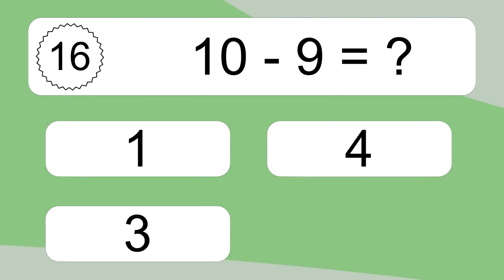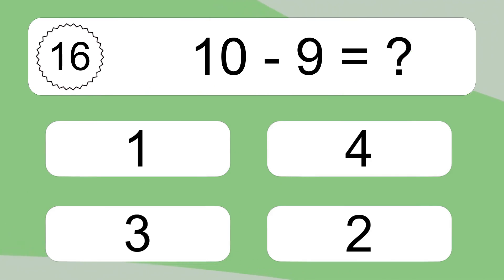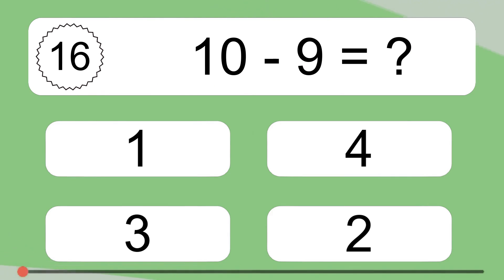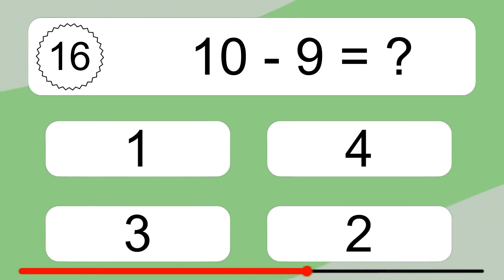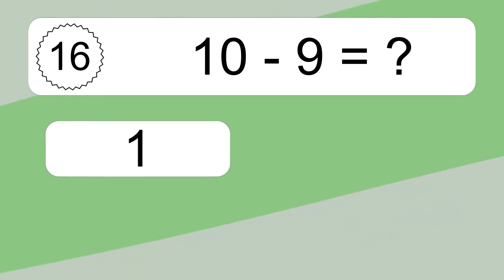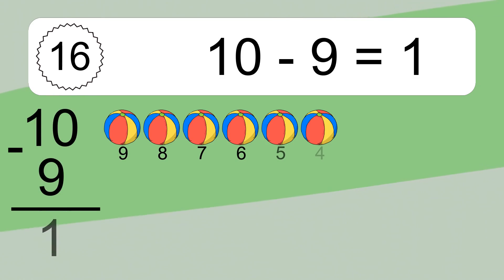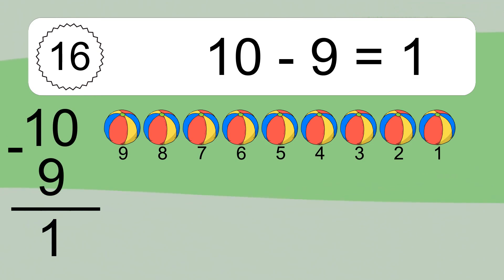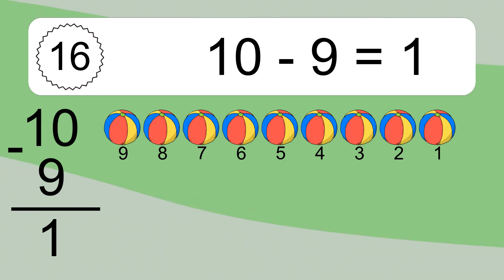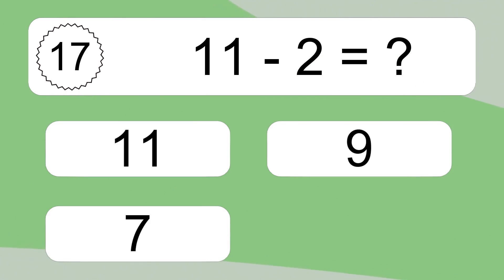10 minus 9 equals 1. Let's count it: 9, 8, 7, 6, 5, 4, 3, 2, 1.